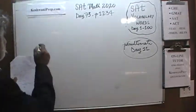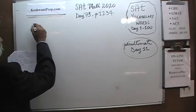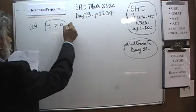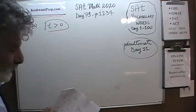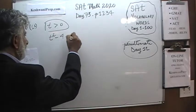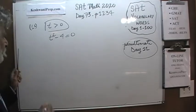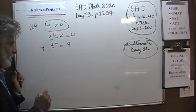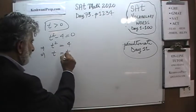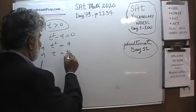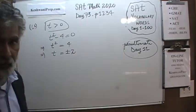Number 16 is very straightforward, very simple. We are told that T is positive. We will find out in a second why they insist that T is positive. We are told that T squared minus 4 is equal to 0, which implies that T squared must equal 4, which in turn implies that T has to be either positive 2 or negative 2. Because positive 2 times positive 2 gives us positive 4, and negative 2 times negative 2 also gives us positive 4.